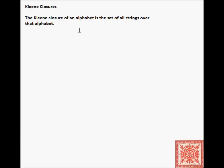Typically, the Kleene closure — unless it's the empty alphabet — the Kleene closure of any non-empty alphabet is infinite. If we have an alphabet sigma, the Kleene closure is denoted as sigma asterisk in superscript position.